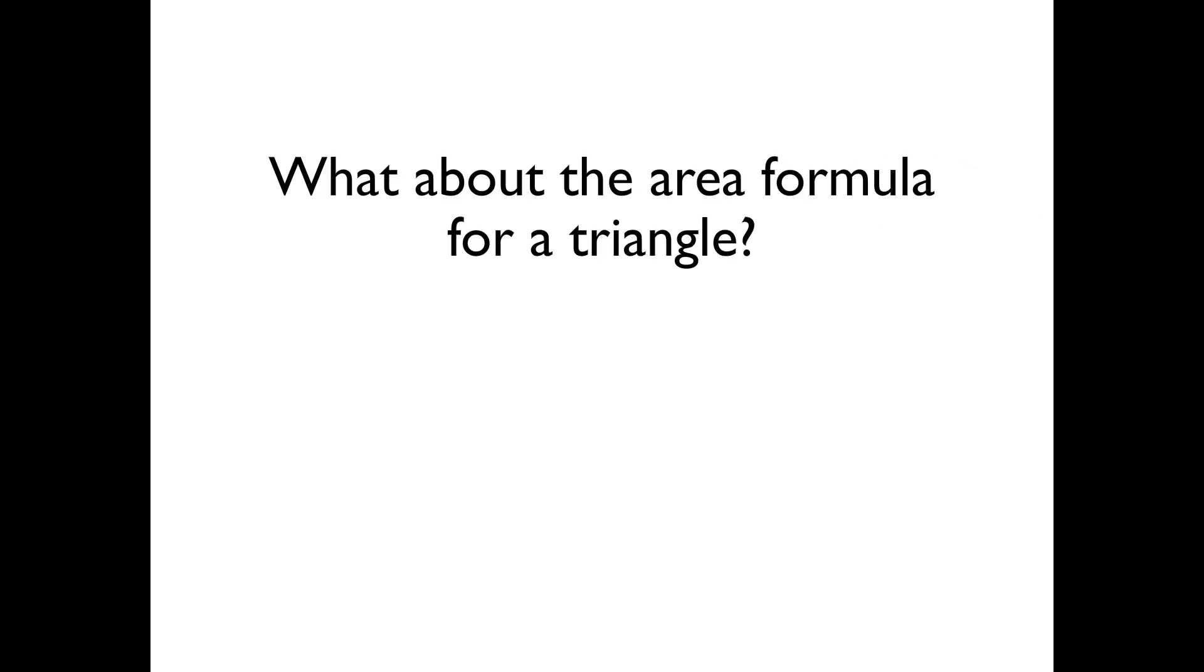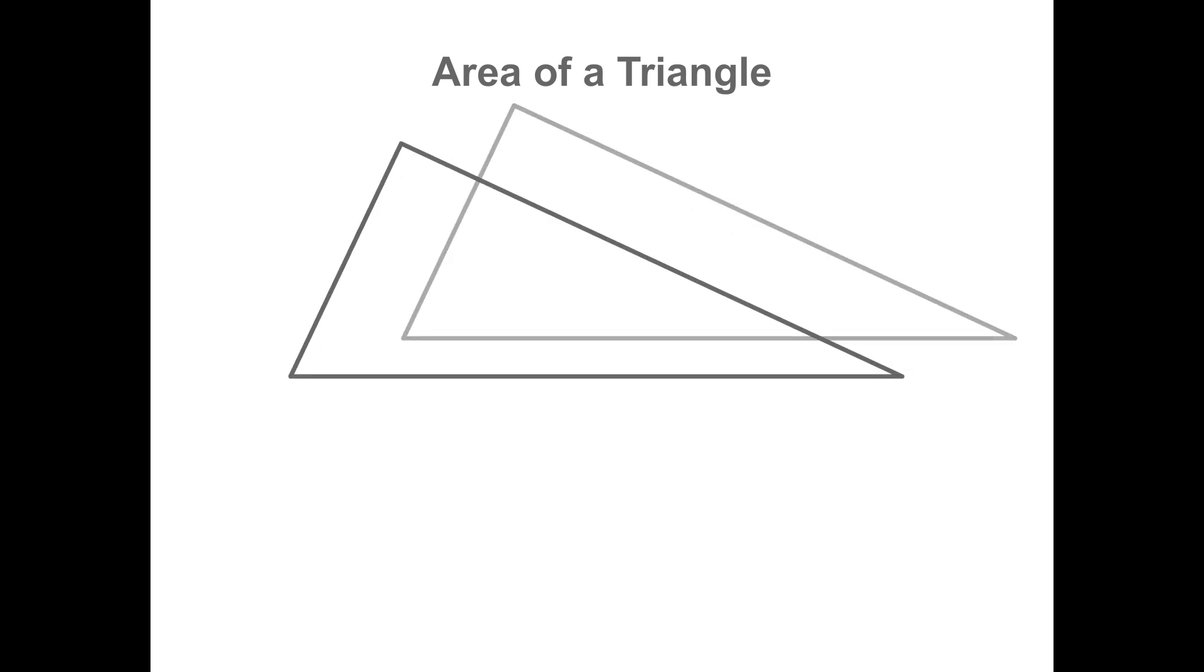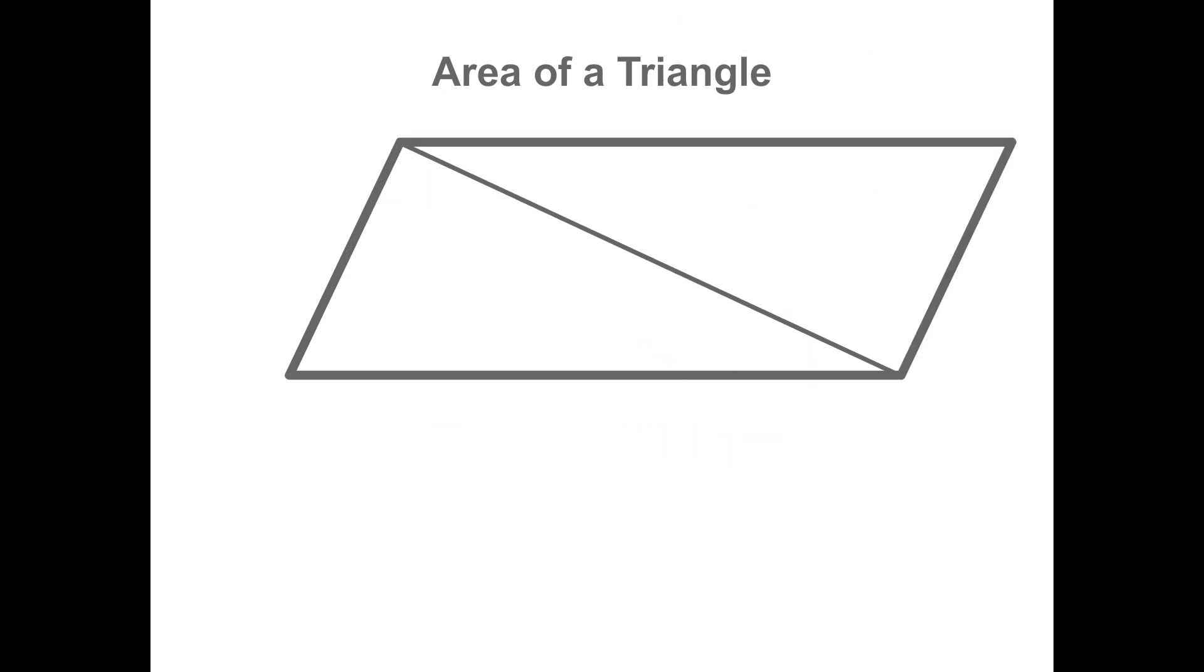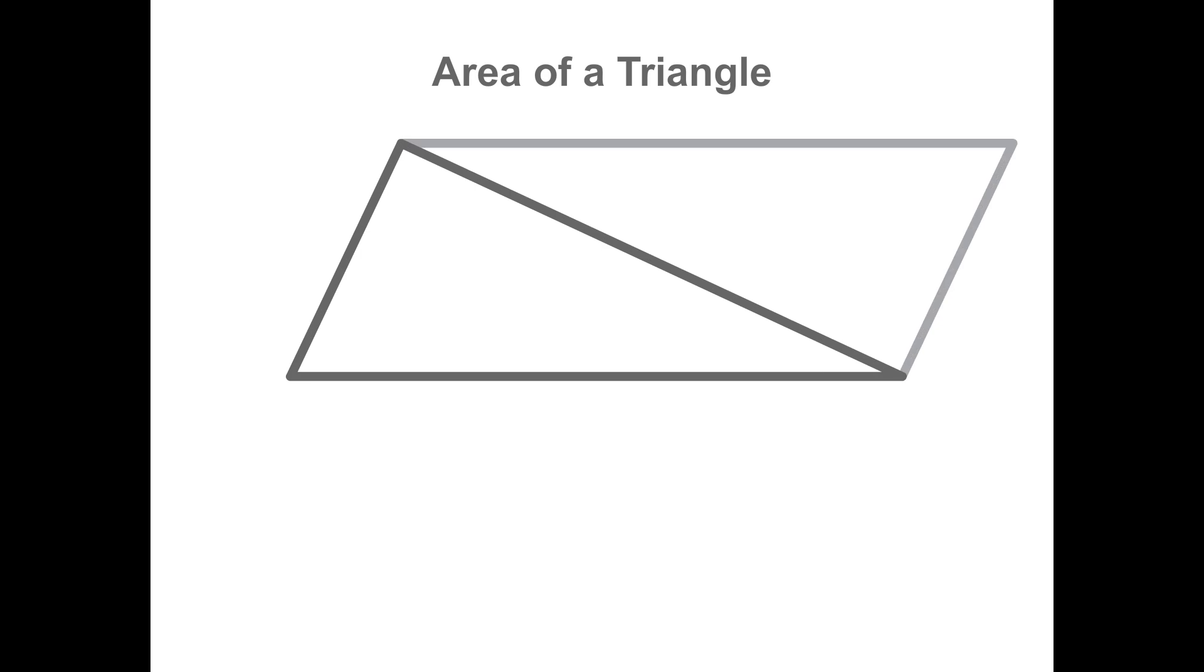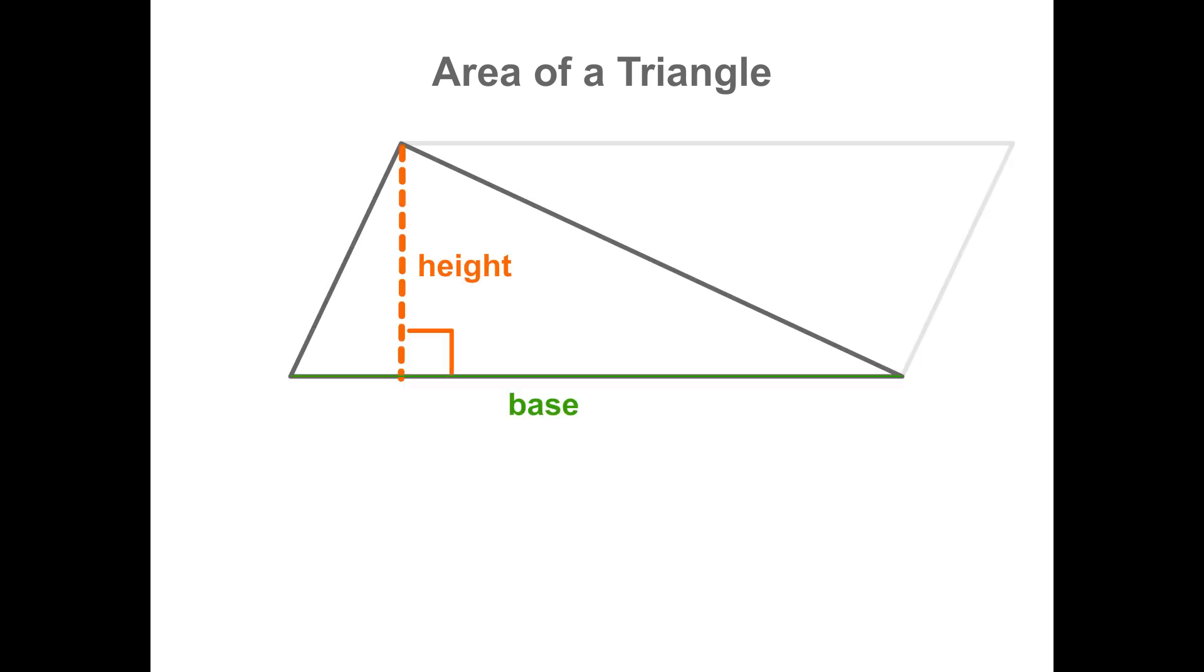What about the area formula for a triangle? Let's figure that out. Start with a triangle of any shape or size. If we make a copy of that triangle and then rotate it around one of the sides, a parallelogram is formed. Two congruent triangles form the parallelogram, so the area of one triangle is half the area of the parallelogram.